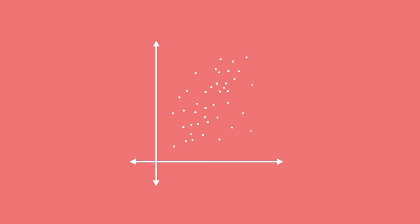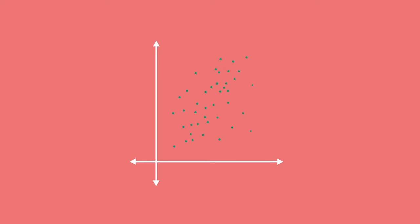So if this is my scatterplot, I would have a whole lot of dots like this. My line of best fit would be the line that best fits all of these dots.